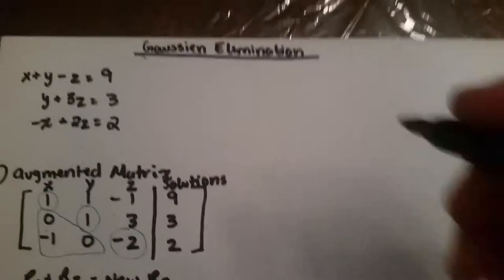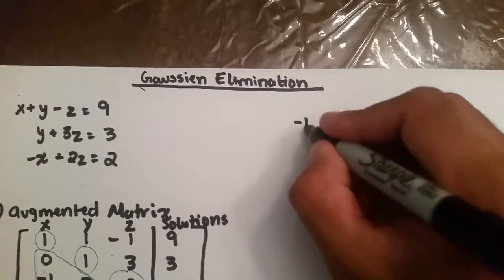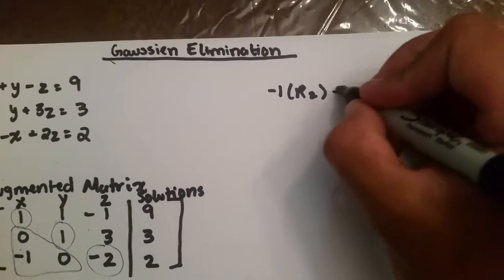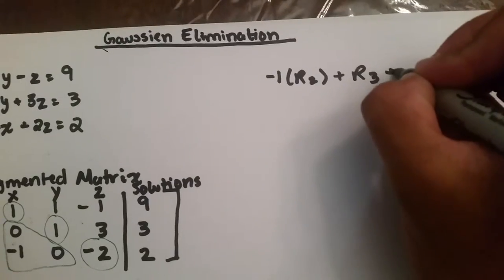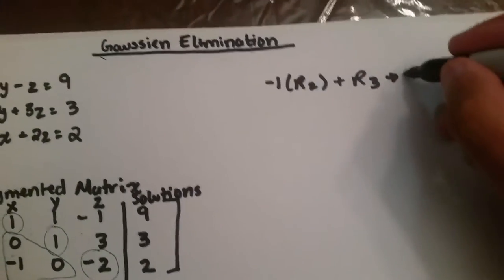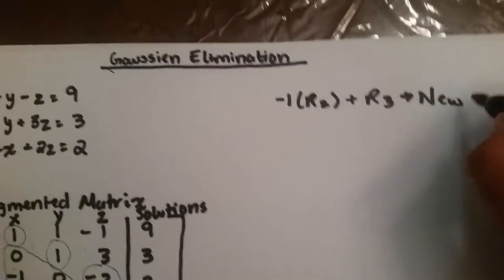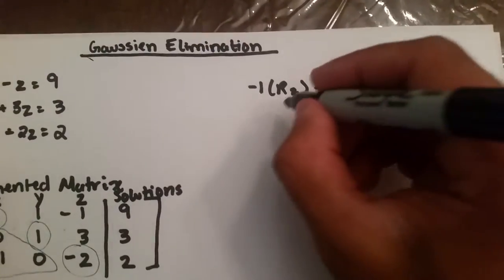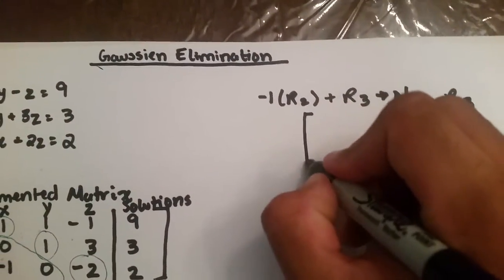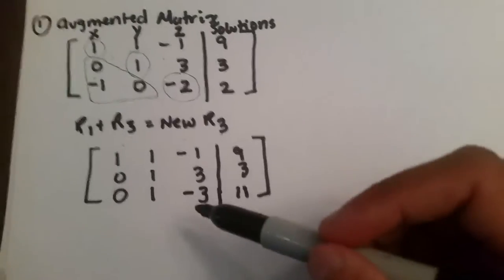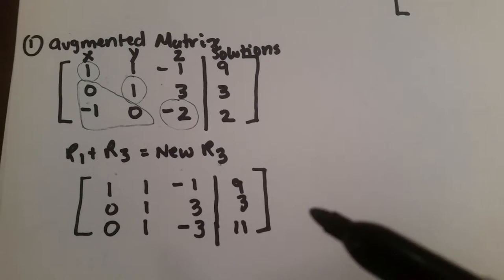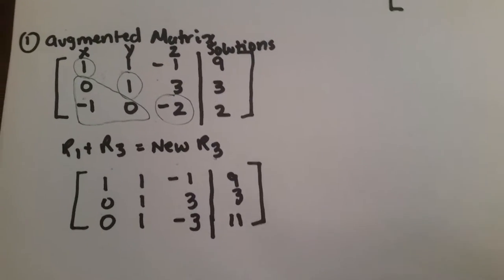The next thing is to multiply negative 1 to row 2, and add it to row 3, making it your new row 3. So, if you multiply row 2 by negative 1, you get 0, negative 1, negative 3, and negative 3.